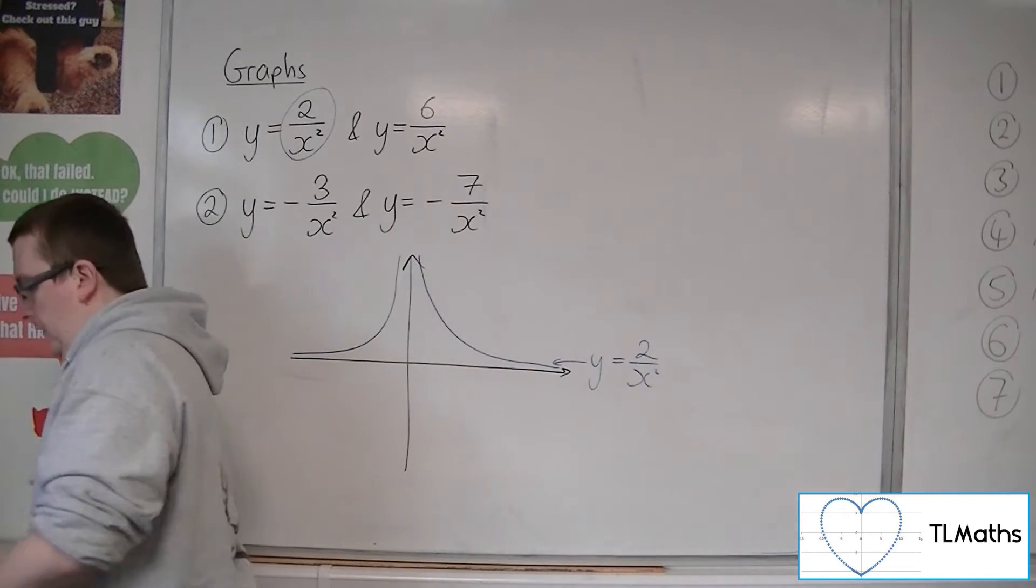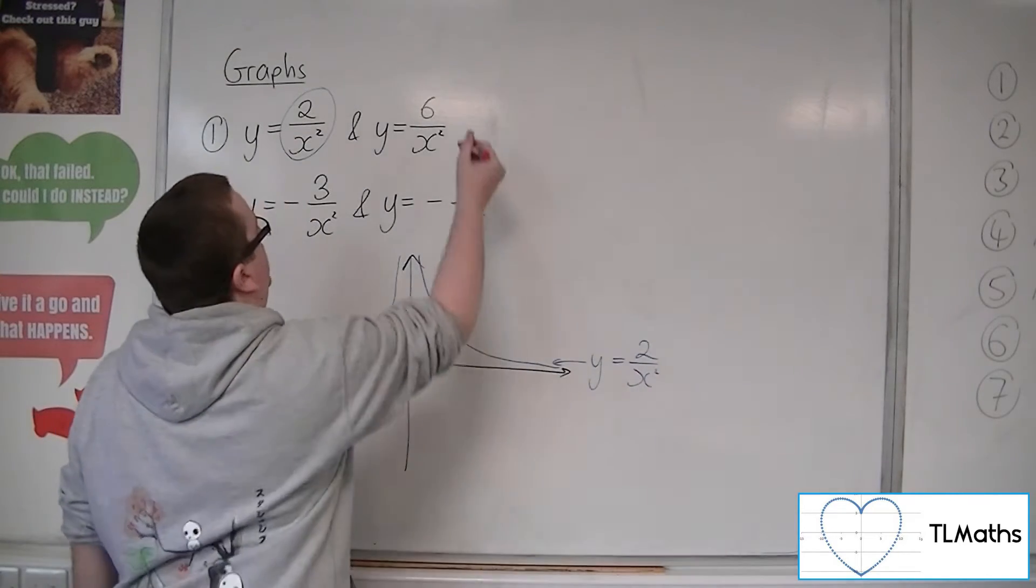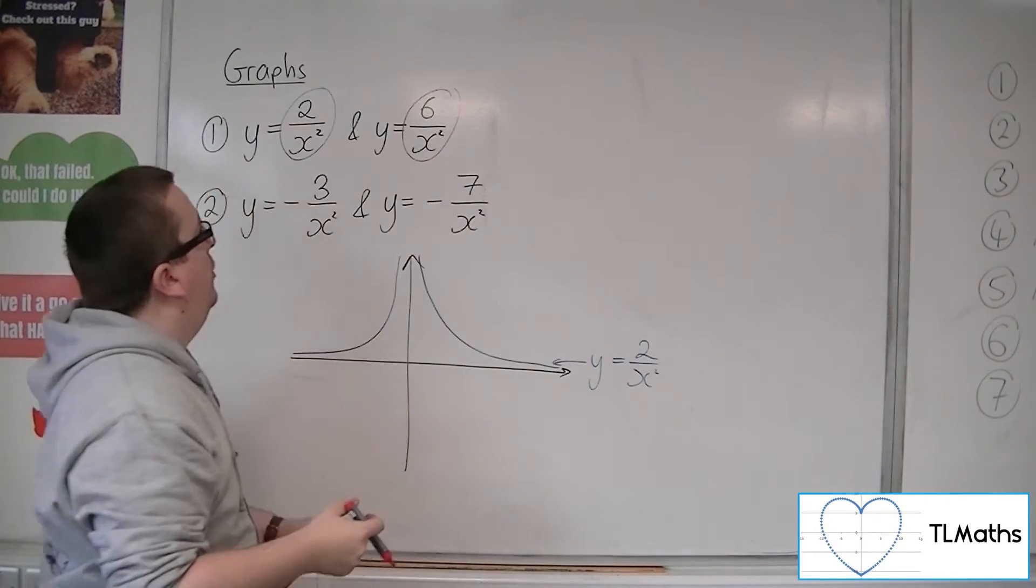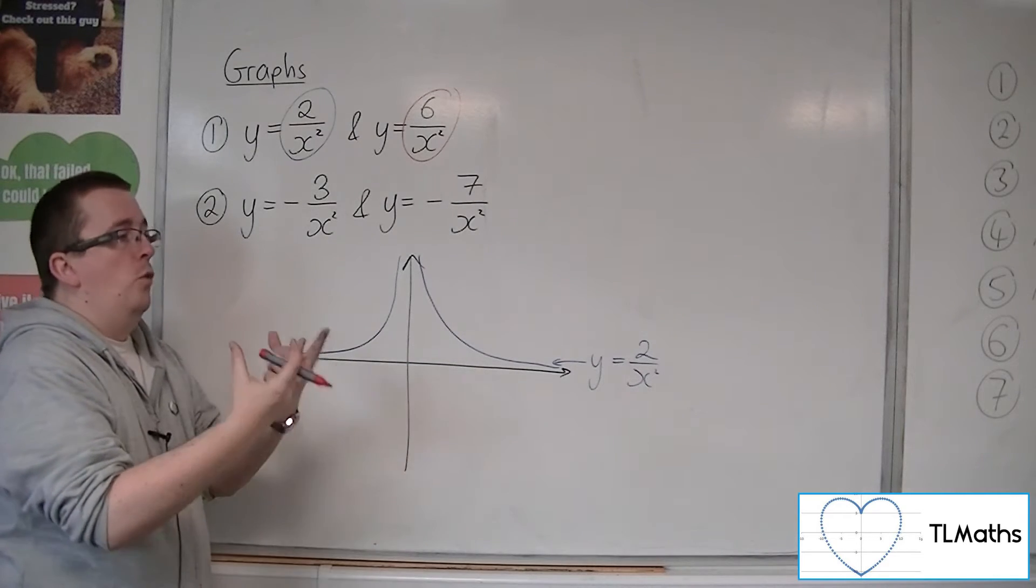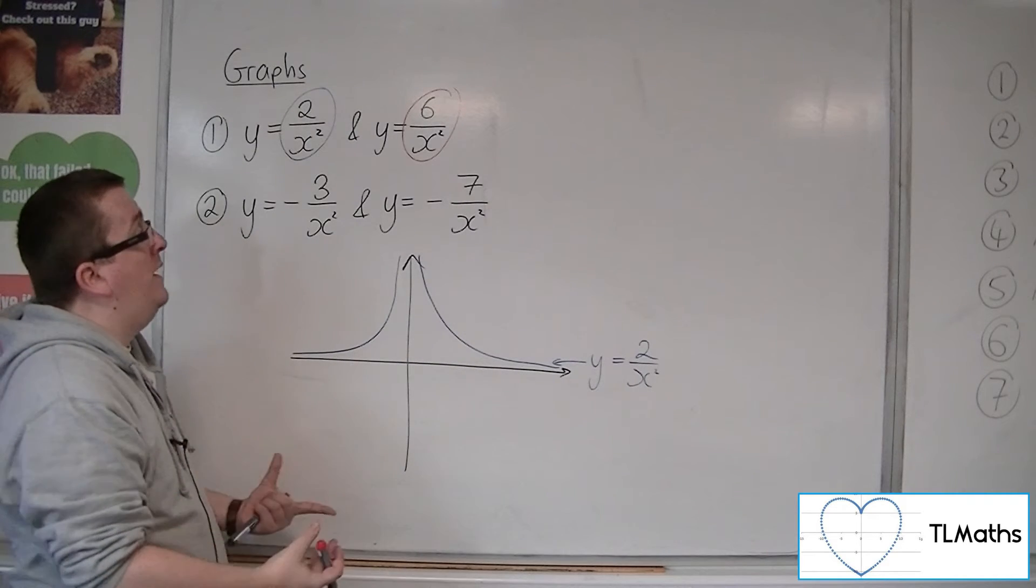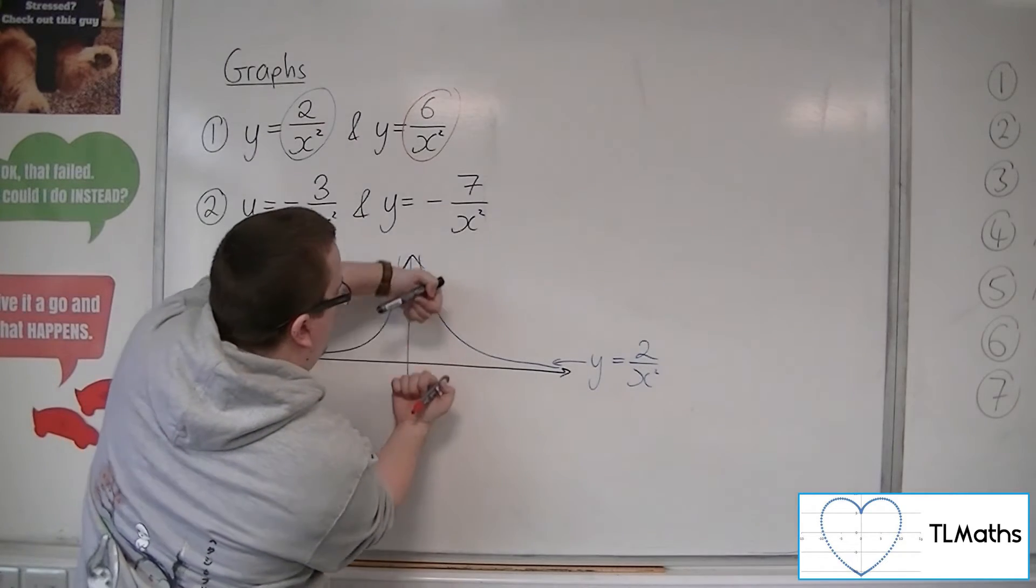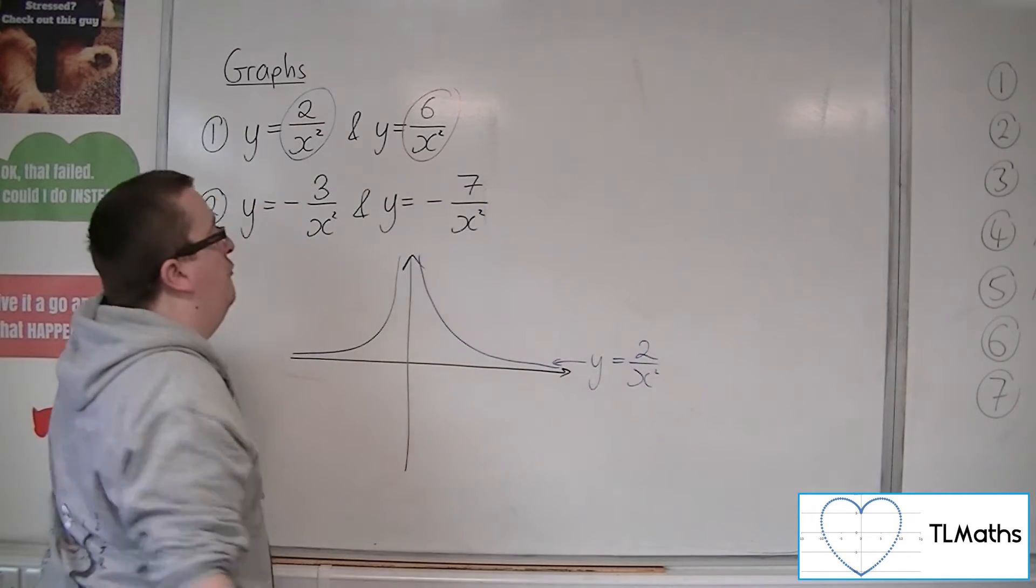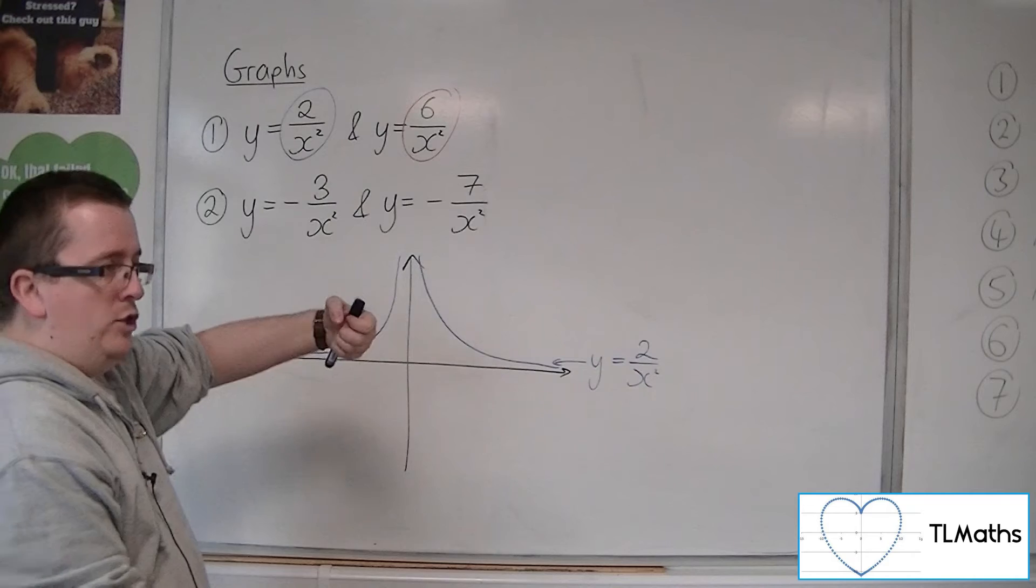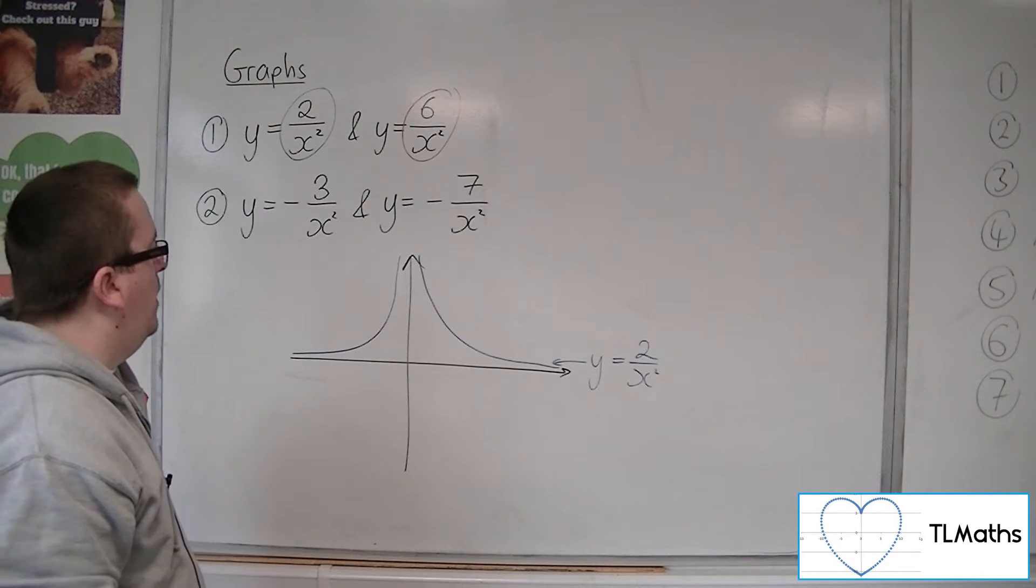Now that's 6 over x squared. Well, because you're multiplying the 1 over x squared by a greater number, this time 6 instead of 2, it's going to pull the graph further away from the x-axis. It's going to stretch it parallel to the y-axis.